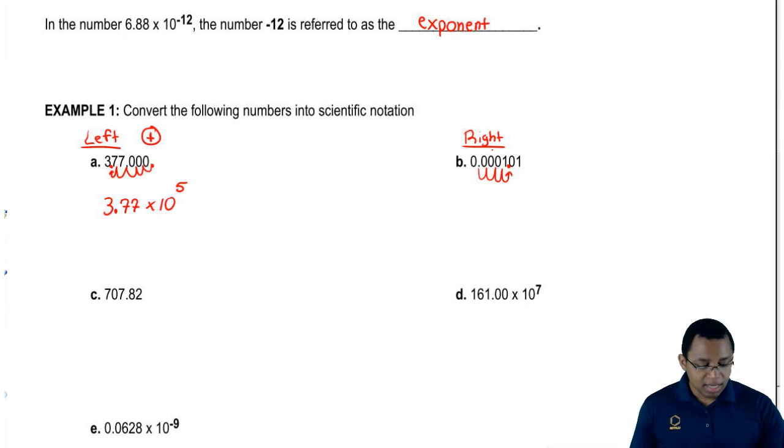Remember, every time we're going to the right, the exponent will be negative. Since we moved it over 4 spaces to the right, it's going to be 1.01 times 10 to the minus 4.